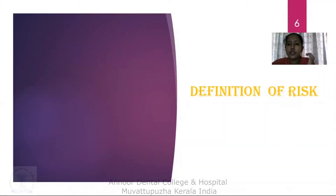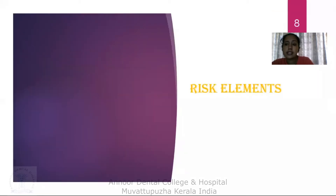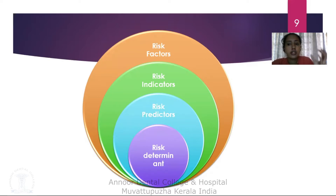Coming on to the definition of risk. Risk is the probability that an individual will develop a specific disease in a given period. Risk can be identified in terms of the risk elements: risk factors, risk indicators, risk predictors, and risk determinants. We must know the definition of each — what is a risk factor, what is a risk indicator, what is a risk predictor, and what are risk determinants — which we will be discussing in the coming slides.